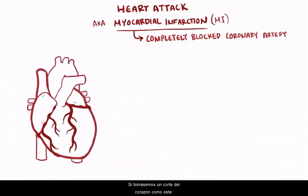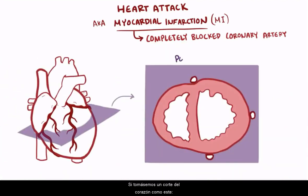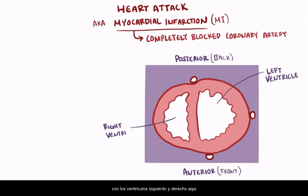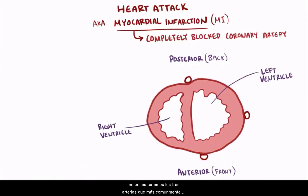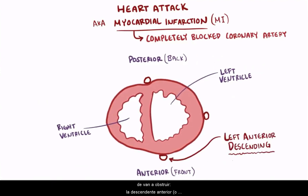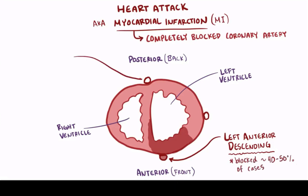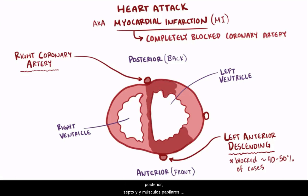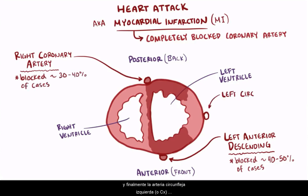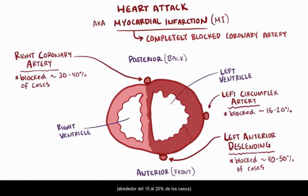If we take a slice of the heart — this side being posterior, or the back, and this being anterior, or the front — with the left and right ventricles, we have the three most commonly blocked arteries. The left anterior descending, or LAD, supplies blood to the anterior wall and septum of the left ventricle, accounting for about 40–50% of cases. The right coronary artery, or RCA, covers the posterior wall, septum, and papillary muscles of the left ventricle, accounting for about 30–40% of cases. And finally, the left circumflex artery, or LCX, supplies the lateral wall of the left ventricle, about 15–20% of cases.